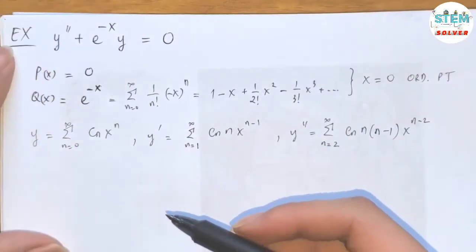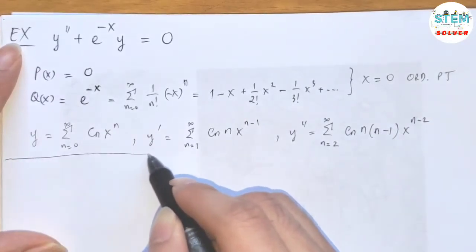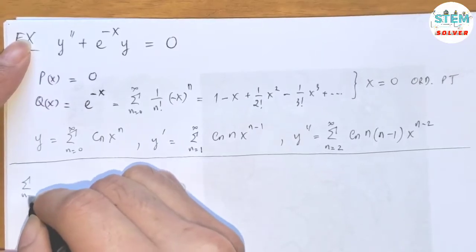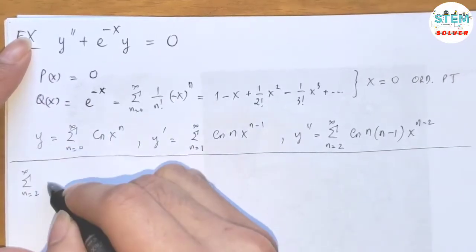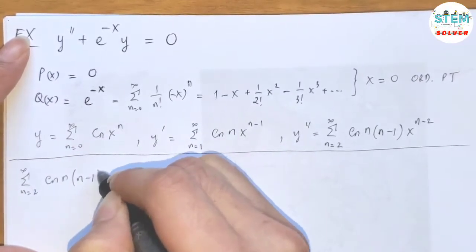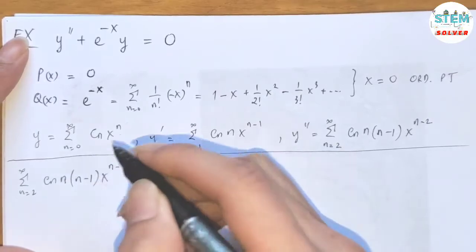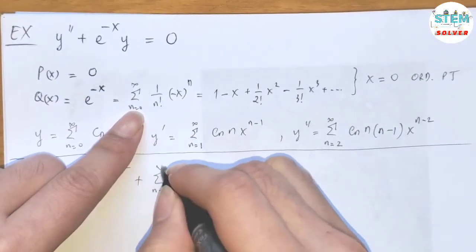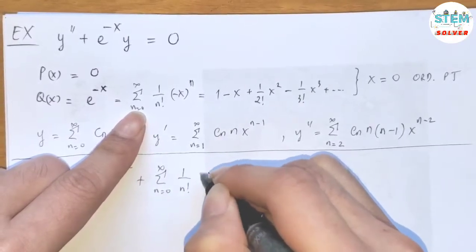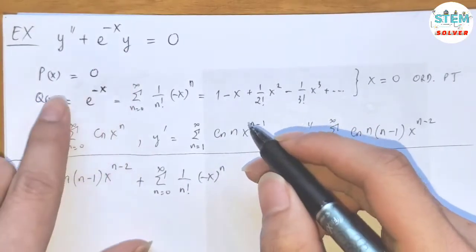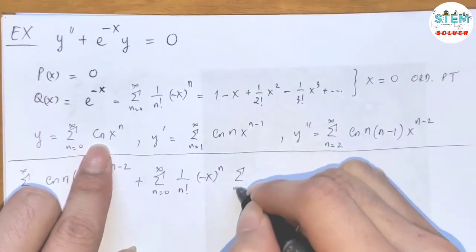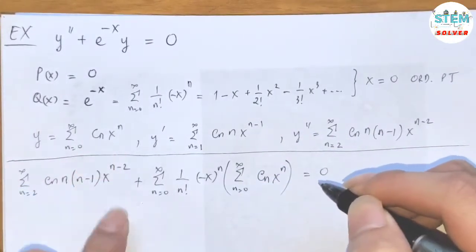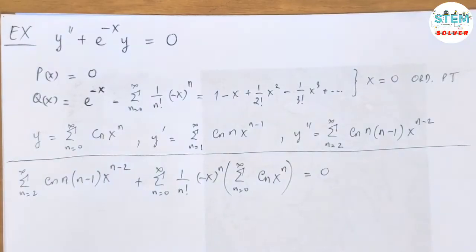Now we're going to plug these into the equation. Plugging in, I have the power series from 2 to infinity of c_n times n times n minus 1 times x to the n minus 2, plus e to the negative x — which is the power series from 0 to infinity of 1 over n factorial times negative x to the n — times y, which is the power series from 0 to infinity of c_n times x to the n, equals 0.